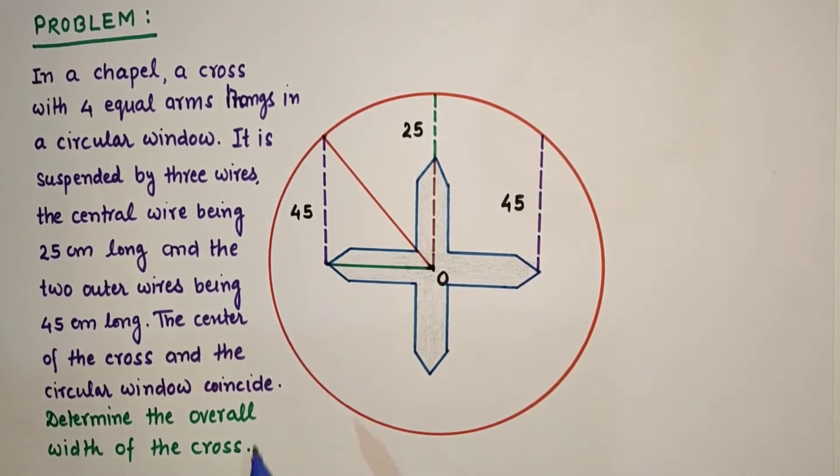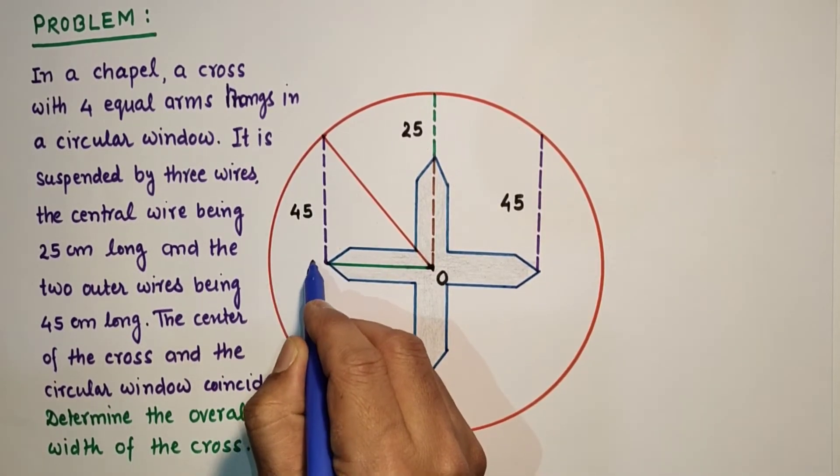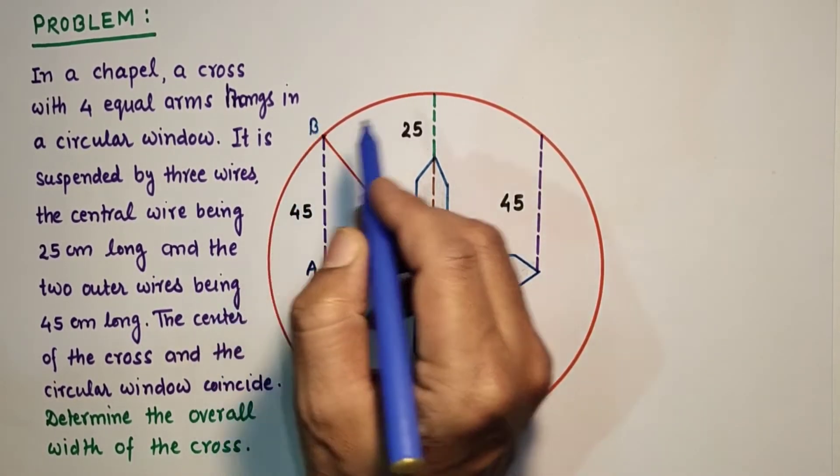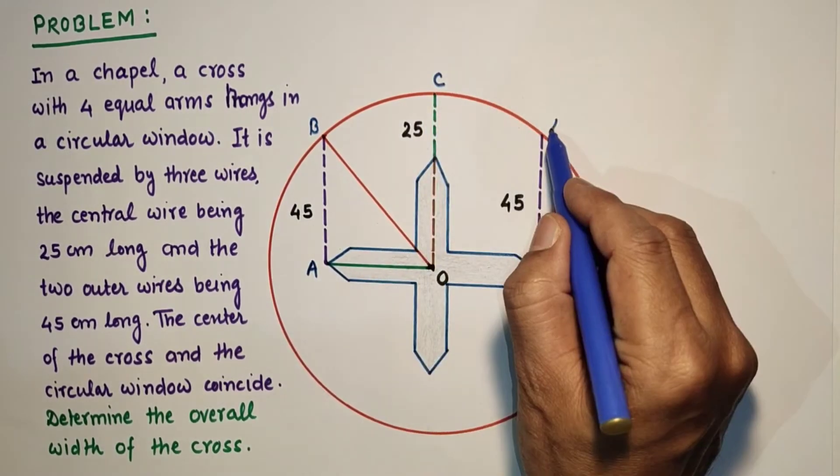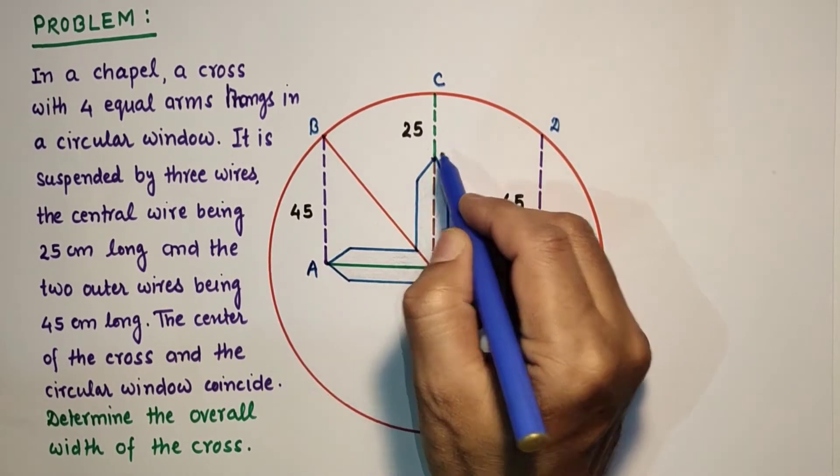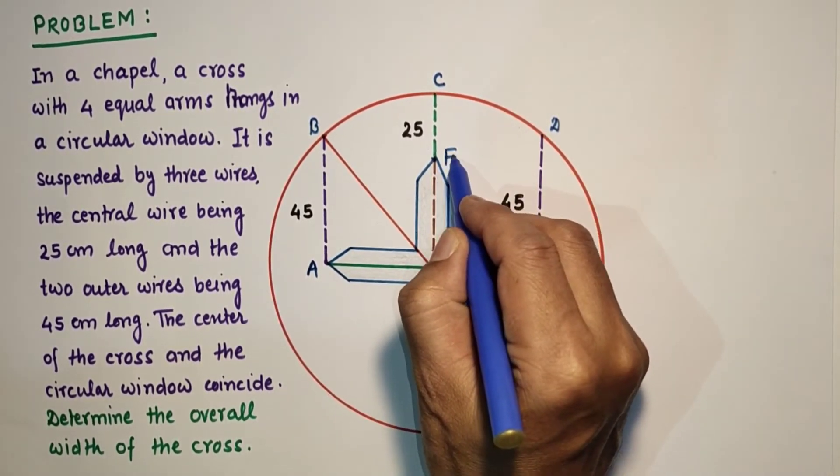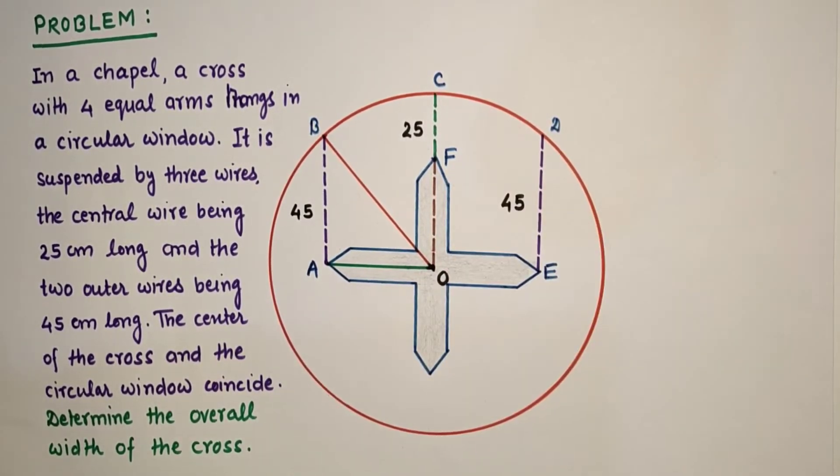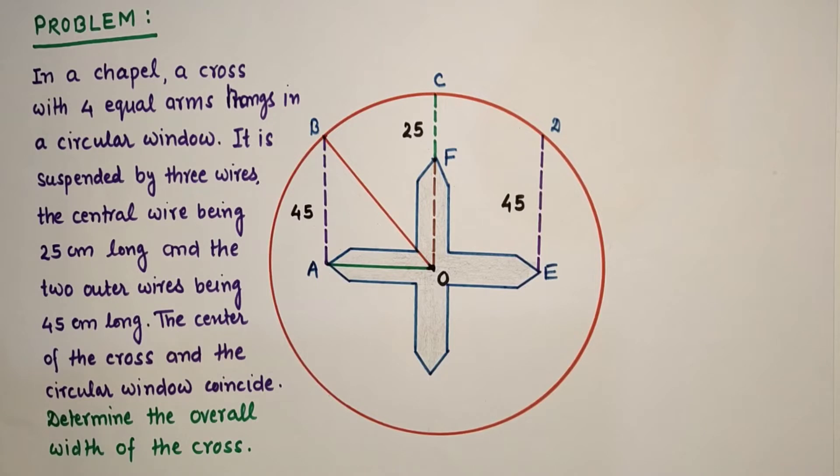Let us name these points. This is A, B, this is C, and this is E. This is F. This is a very simple question. This question was sent on my WhatsApp. One student sent this question asking for a solution. I found it a bit tricky but simple. That's why I am doing this problem here.